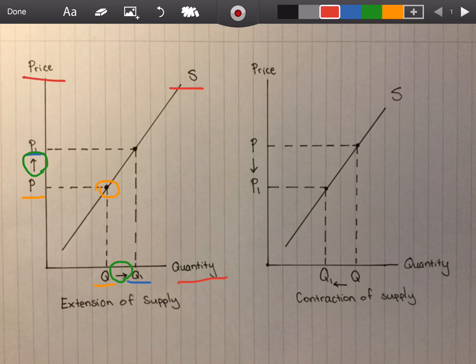Now if we take a look at the contraction of supply, this is when there is a decrease in price. The axes are labeled first, same thing with the supply curve.